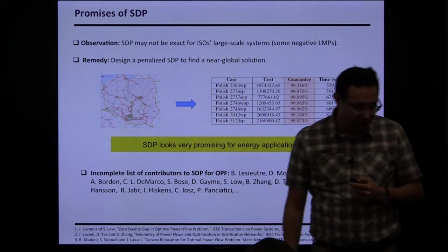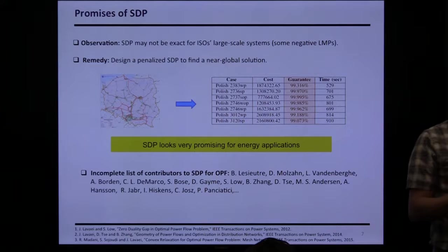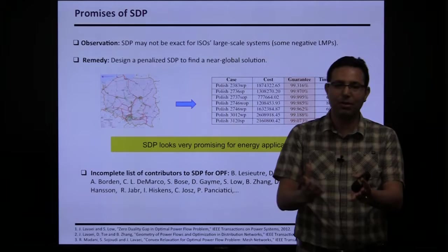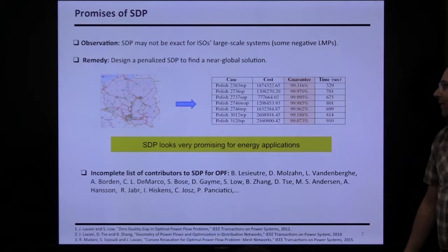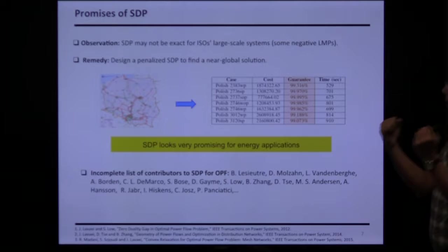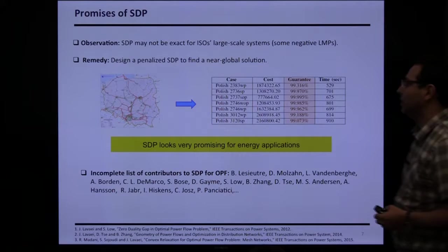SDP looks really promising for energy applications. Many colleagues in academia and industry started working on this, with talks at the Federal Energy Regulatory Commission (FERC). Recently, ARPA-E set up a competition with total cash prizes over $2.5 million for the best algorithm for OPF. Recent studies by FERC show that because of the scale of the problem, approximations are used in practice and we are wasting billions of dollars. This competition brings together people from industry, academia, and government to benchmark the best algorithms.